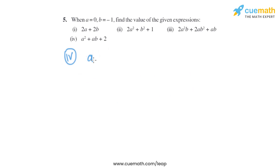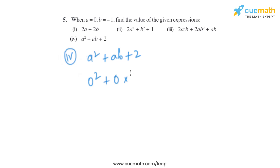In the fourth part, the expression given is a² + ab + 2. Putting in the values, it becomes 0² plus 0 into minus 1 plus 2. Now 0² is 0, and 0 multiplied by anything is 0, so we are left with plus 2 only. The answer is 2.